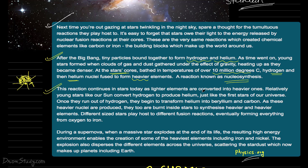Lighter elements keep converting into heavier elements even today. Relatively young stars, like our sun, convert hydrogen into helium. And when all of the sun's hydrogen is exhausted, the helium that has formed will be transformed into beryllium and carbon. As these heavier nuclei are produced, they too are burnt inside stars to synthesize heavier and heavier elements.